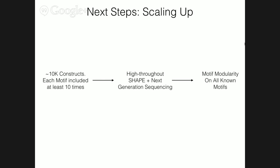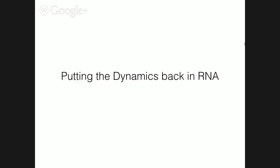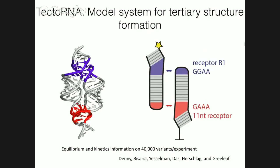And now I'm going to quickly talk about the expansion of RNA Make — specifically trying to model dynamics back into RNA, building on this idea of modularity but now expanding it to modular dynamics. The system I'm going to be using involves two tetraloop-tetraloop receptors that dimerize. Specifically, the bottom one is going to be a GAAA tetraloop receptor and the top is going to be a GGAA tetraloop receptor.